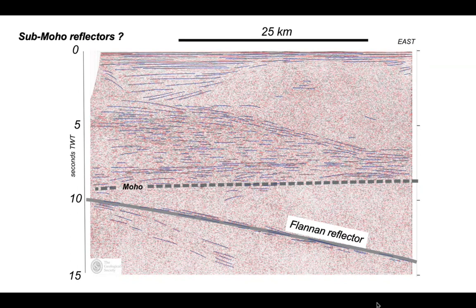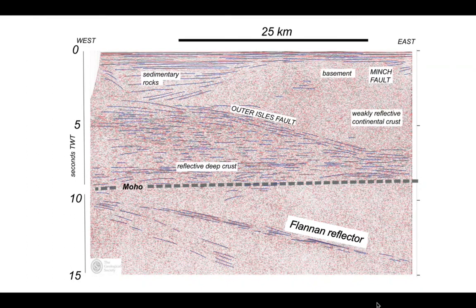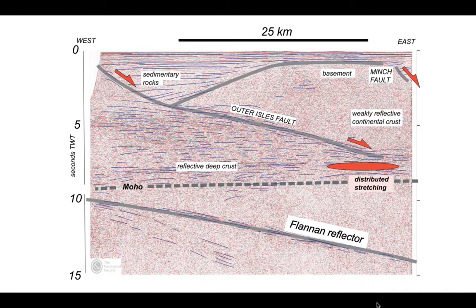Let's put all this information together. We have the Flannan reflector seen in the upper mantle, a continuous Moho picked along the base of the reflective lower crust, and sedimentary basins in the shallow bounded by normal faults. These faults apparently tap down towards the reflective deep crust. The basin-bounding faults can be mapped regionally and have been given names: the Outer Isles Fault, which is the main one in this image, and on the right the Minch Fault. The upper continental crust is largely weakly reflective. Our more complete interpretation suggests that faults in the upper crust tap down into distributed stretching in the deeper crust, and how this relates to the Flannan reflector is open to debate.